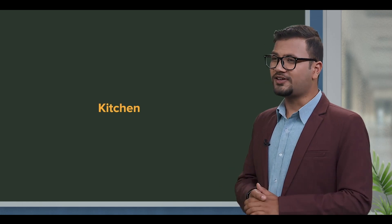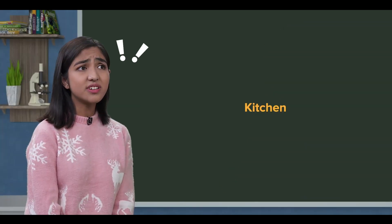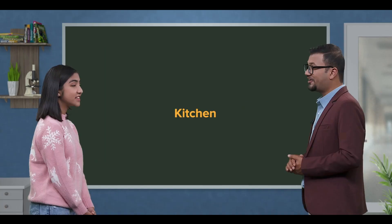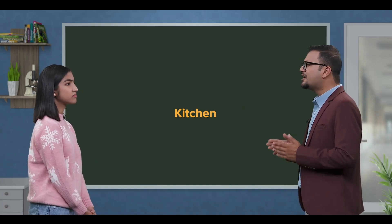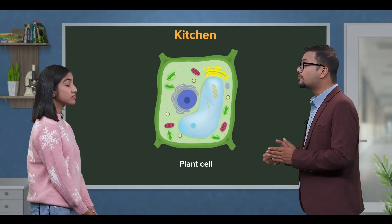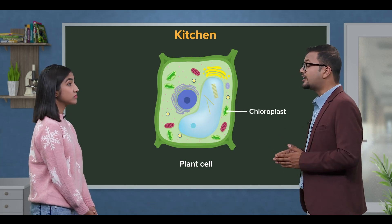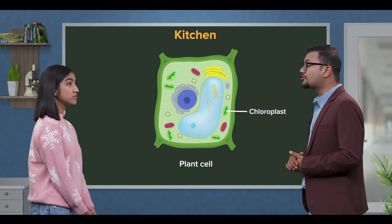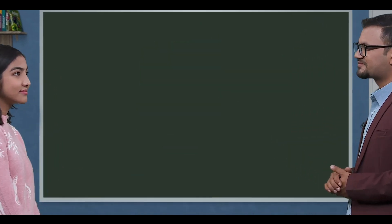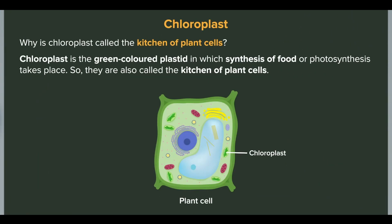This chloroplast is called the kitchen of the plant cell. The plant cell's kitchen is a green cell containing chloroplasts where photosynthesis takes place. In other words, chloroplasts are the green-colored plastid structures in which synthesis of food or photosynthesis takes place, so they are also called the kitchen of plant cells.